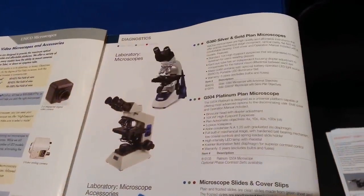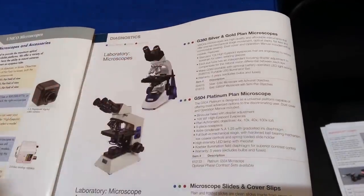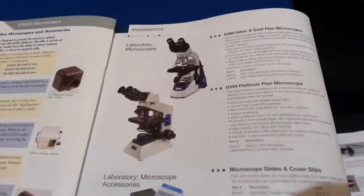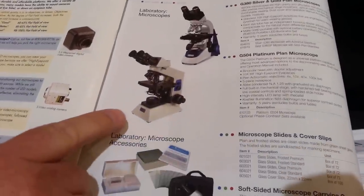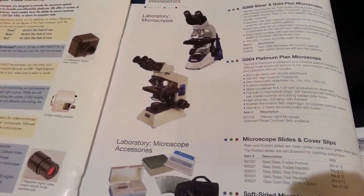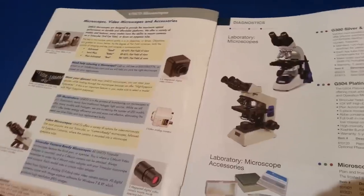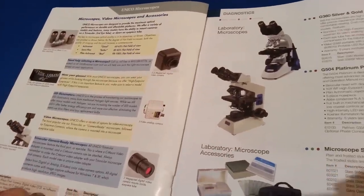First we're going to look at the MWI VET1 silver and gold microscopes. Those are the G380 series and then we're going to look at the platinum series, the G504. But first let's talk a little bit about what makes them silver or gold or platinum.